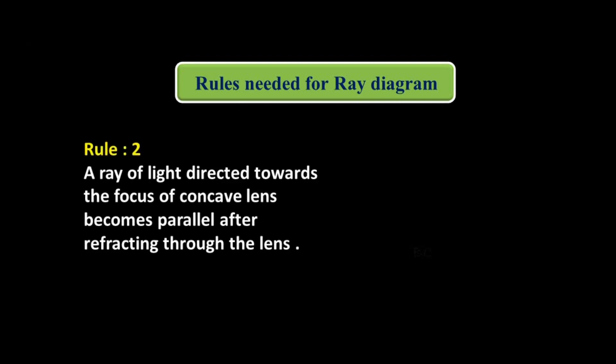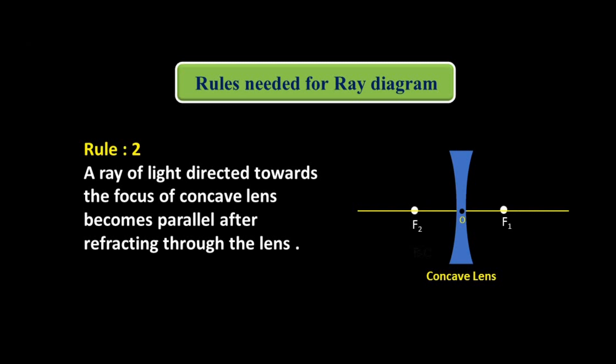Rule number 2: a ray of light directed towards the focus of a concave lens becomes parallel to the principal axis after refracting through the lens. The ray directed towards the focus, after refraction, becomes parallel to the principal axis.